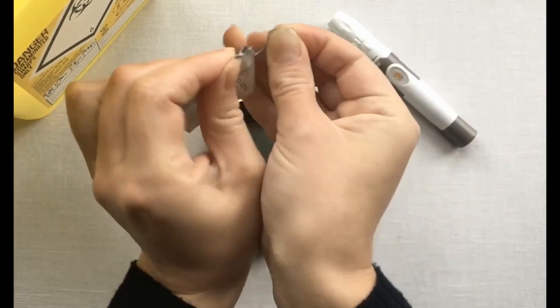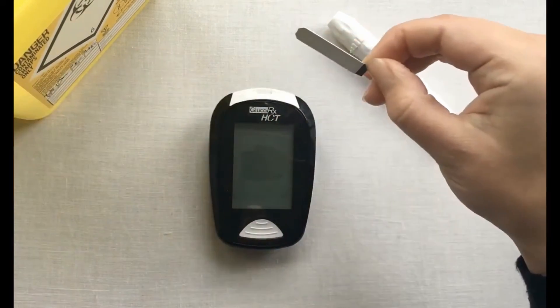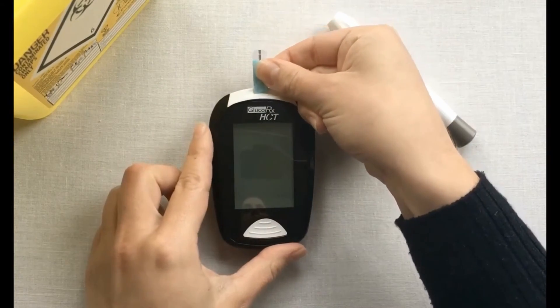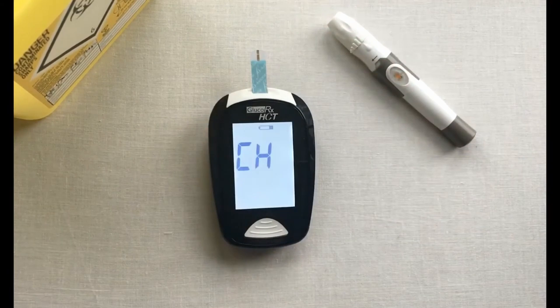Take your ketone strip out of the packet. With the meter turned off, insert your test strip into the top of the meter. The meter will automatically identify if you are using a blood glucose or blood ketone strip.